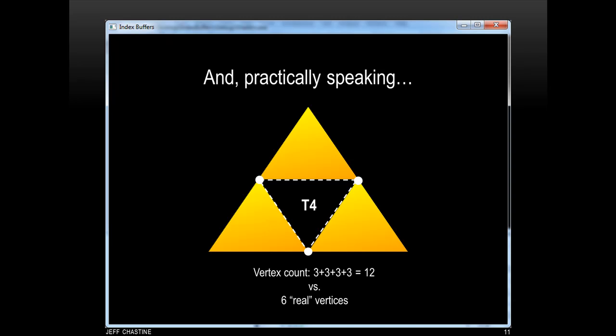And then practically speaking, most of the models that we work with don't have holes like the one that you see here. So more realistically, we would actually have four triangles here for a total of 12 vertices. And this is really where you see a big difference, because knowing what we know now, we would store 12 vertices, whereas really we might be able to get away with just six.